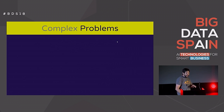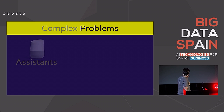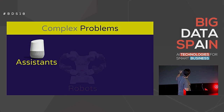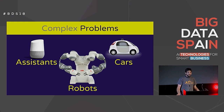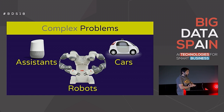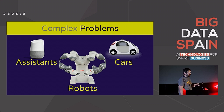There are a lot of complex problems that we want to resolve with AI, and many times we go for assistants, or car robots, or autonomous cars, and we always think of one single algorithm that resolves everything — like a Rosetta Stone or cornerstone of artificial intelligence. Today we are going to present an alternative to this.